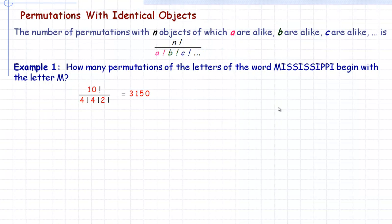Now if the restriction that it had to begin with the letter M wasn't there, then we would instead have an 11 factorial here if we didn't have the restriction. So it would be 11 factorial over 4 factorial, 4 factorial, 2 factorial. And so it would increase the number of arrangements a bit.